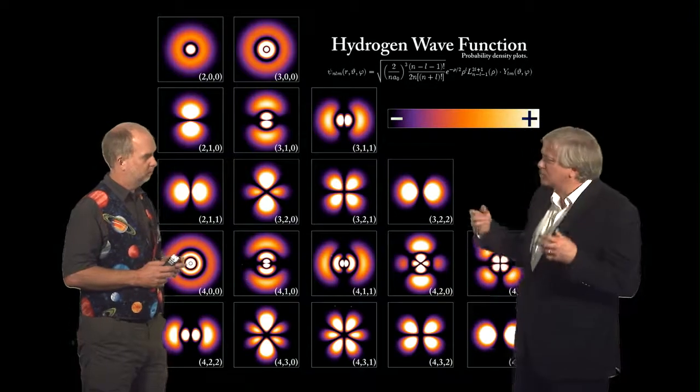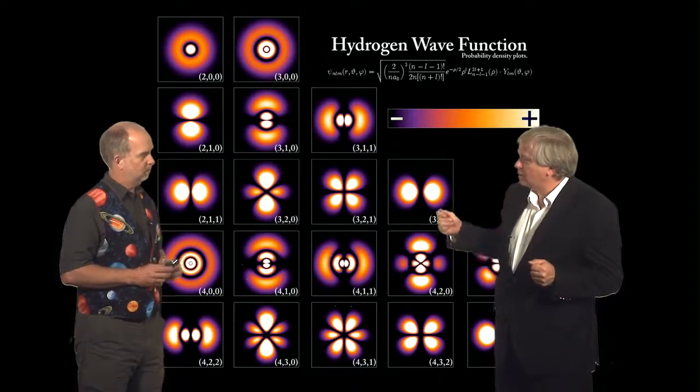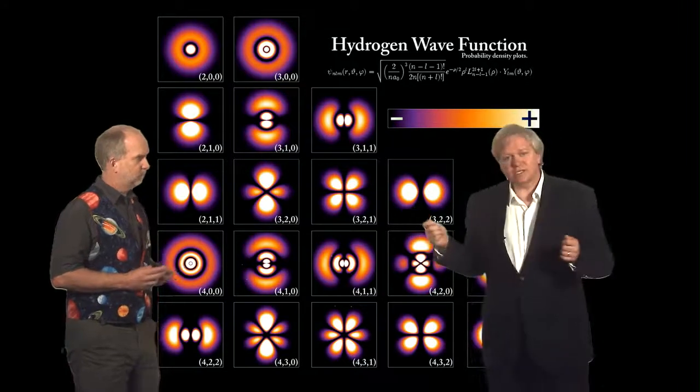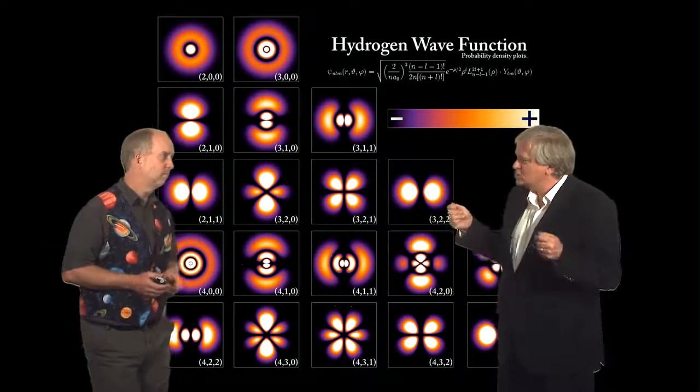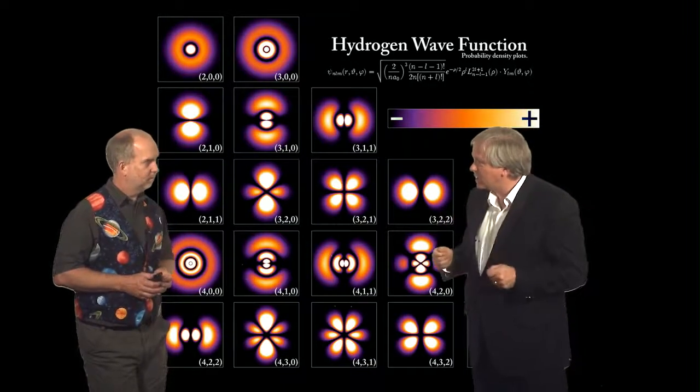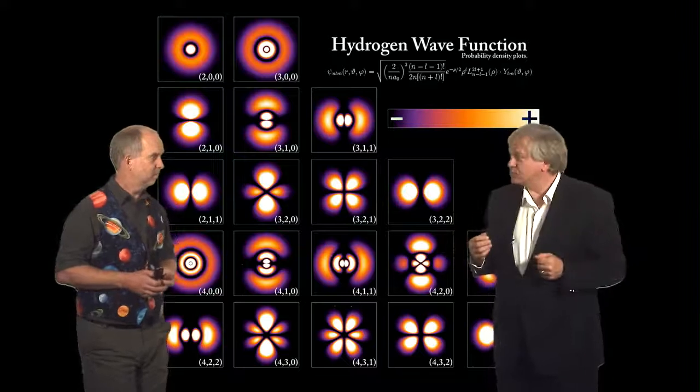But there's a rule that chemists have figured out for atoms heavier than hydrogen that have multiple electrons, is that the electrons do not like to be in the same state at the same time. This is known as the Pauli exclusion principle.